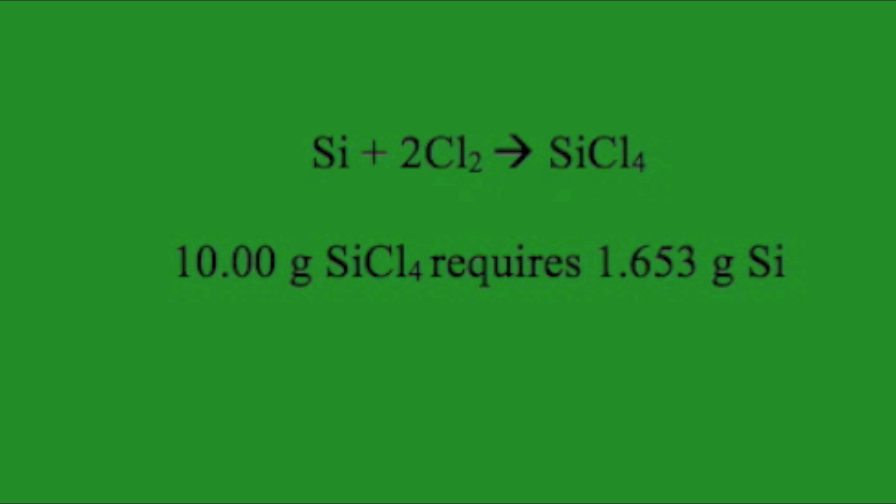After going through all of the stoichiometry, I determined that in order to synthesize 10.00 grams of silicon tetrachloride, I would need 1.653 grams of silicon.